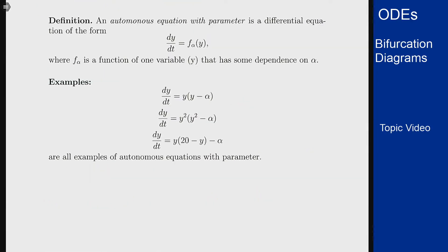The definition: An autonomous equation with parameter is a differential equation of the form dy/dt equals f sub alpha of y. The alpha is in the subscript to note that it's a different sort of variable than y. The y is the thing that's actually changing, while alpha is our adjustable parameter. So f sub alpha is a function of one variable y that has some dependence on alpha.